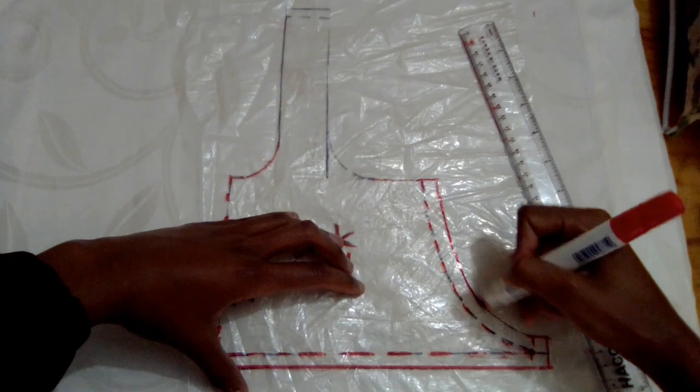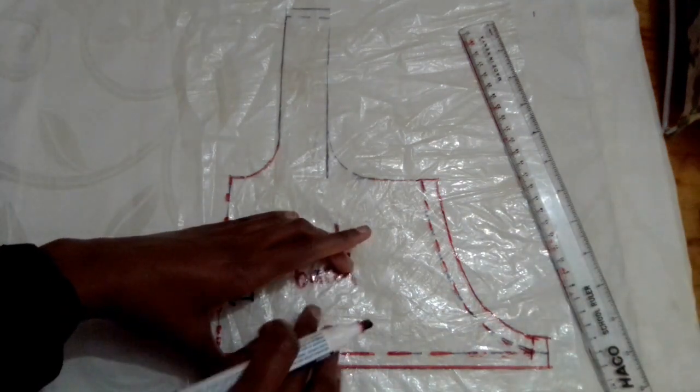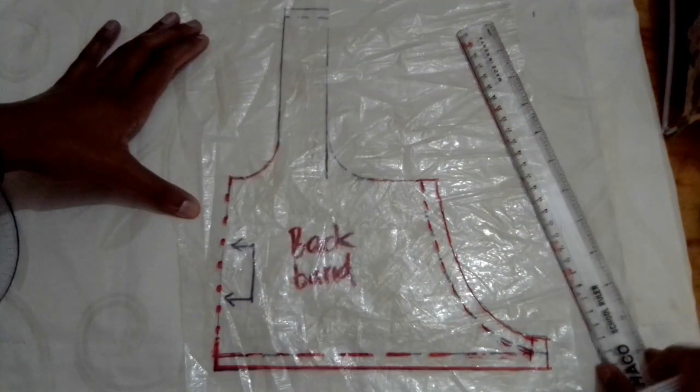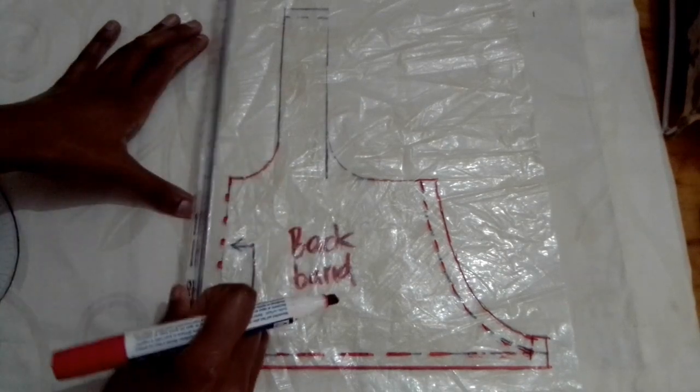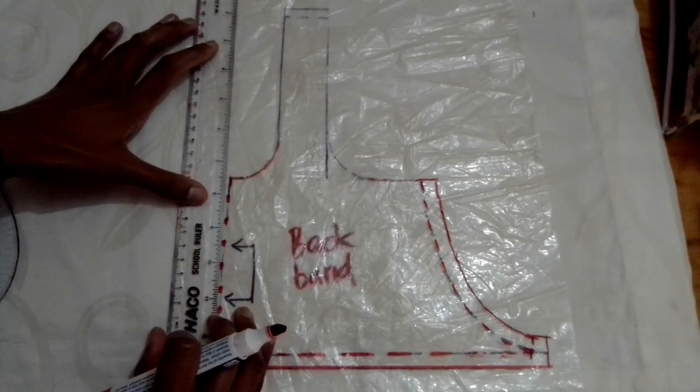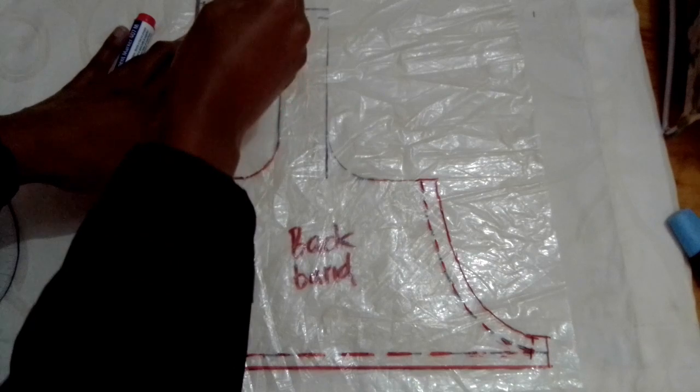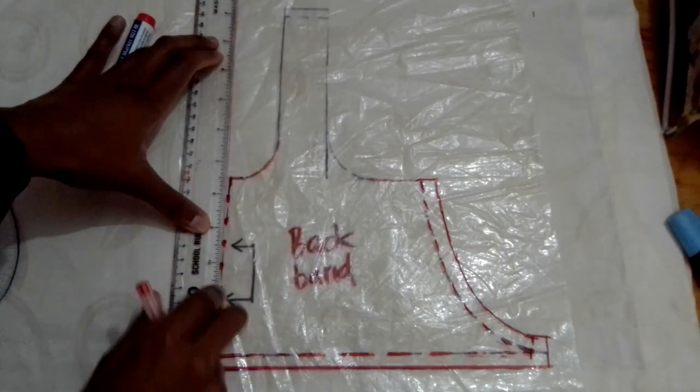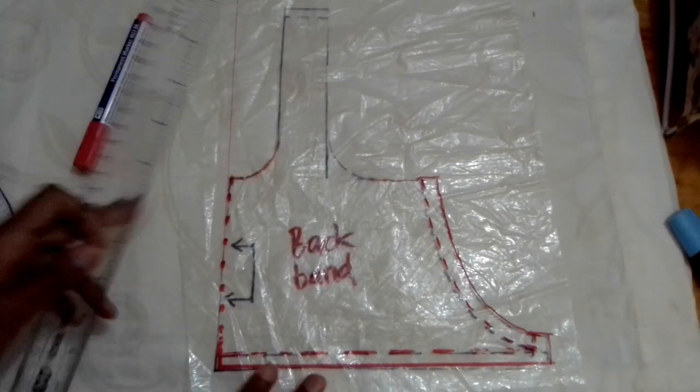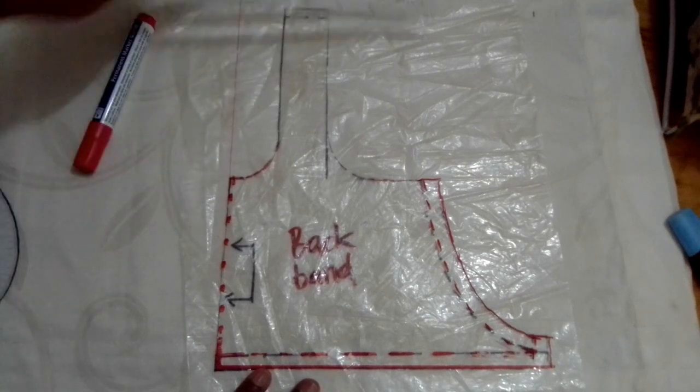Then draw the seam line and the cutting line for the swoop of your front. Then you're going to grab your ruler and draw a perpendicular line, just extending the line that's the center back line all the way up the top of the paper.